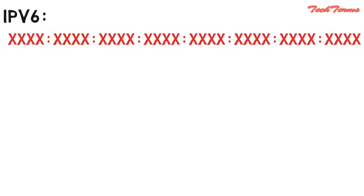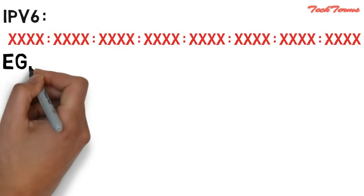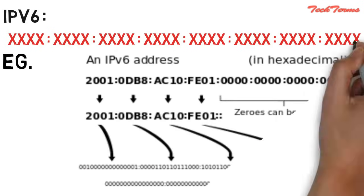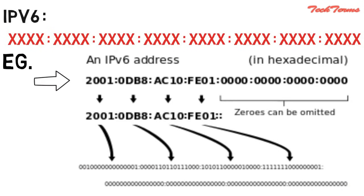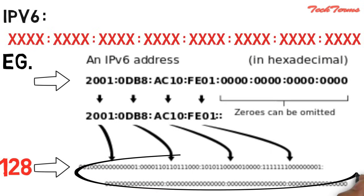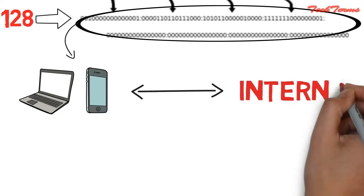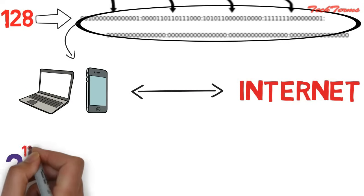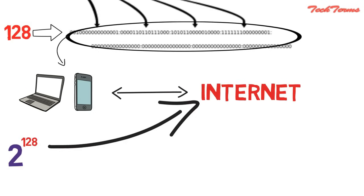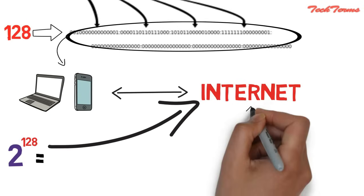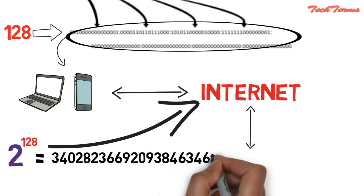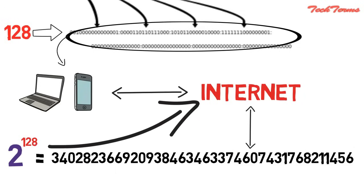In human-friendly form, IPv6 is written as a group of 8 hexadecimal numbers separated by colons. For example, the IPv6 address can be written like this. While in computer-friendly form, IPv6 address is written as a sequence of 128 ones and zeros. Since a unique sequence of ones and zeros is given to each computer connected to the internet, with IPv6 a total of 2 raised to the power 128 devices can be connected to the internet — which is actually far more than enough for many future generations.